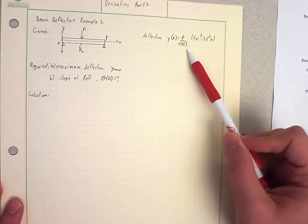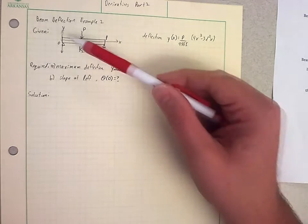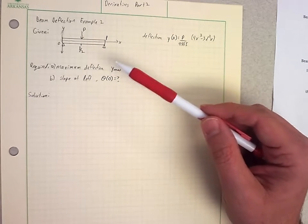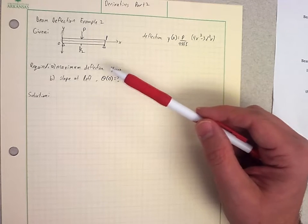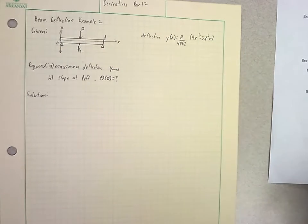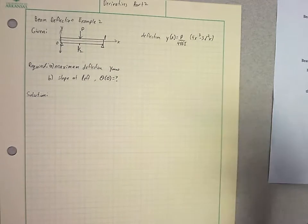We have our equation for the deflection Y, which is how much it bends. We want to know what is the maximum deflection, and it also wants to know slope at the left, which would be here where X is equal to 0. So those are the things we're trying to find.